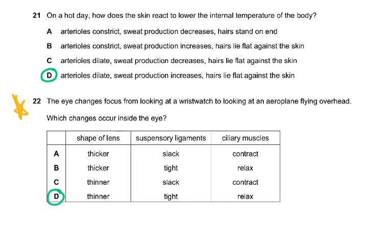Question twenty-one: on a hot day, how does the skin react to lower the internal body temperature? Arterioles constrict and sweat production decreases — that's wrong. The correct answer is arterioles dilate — not capillaries, that's the wrong term — and sweat production increases. On a hot day, hair also lies flat against the skin.